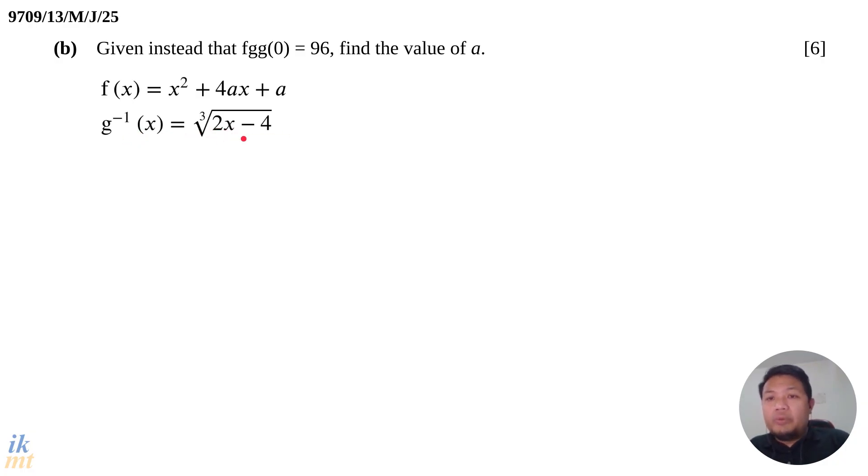So this function we cannot use directly. So what we have to do is, we have to find the function G from the G inverse. So the way to do that is, if you remember, if a function can be inverted, then you can invert the inverse to get the original function. So that means G inverse, if you inverse the G inverse, you'll get G. So our aim right now is to perform the inverse of G inverse.